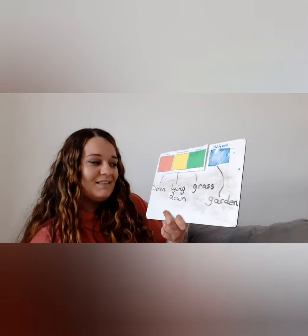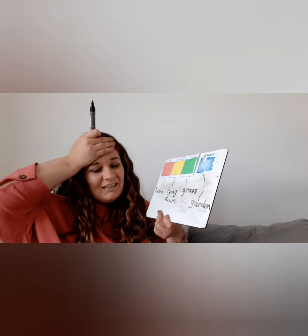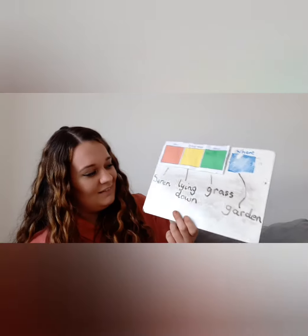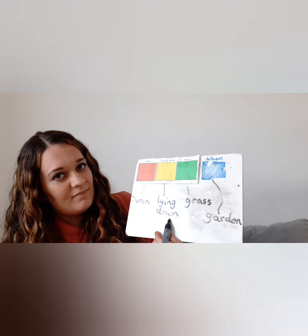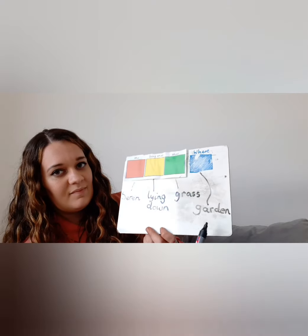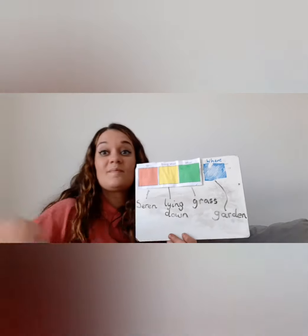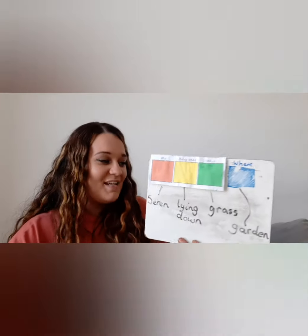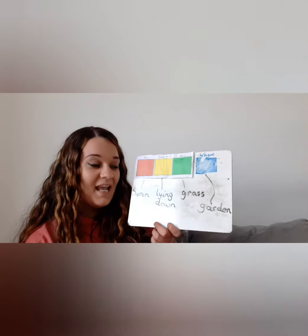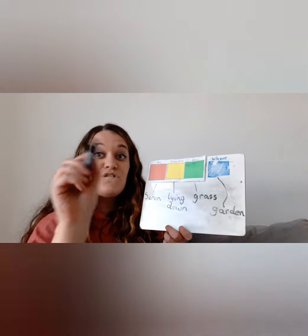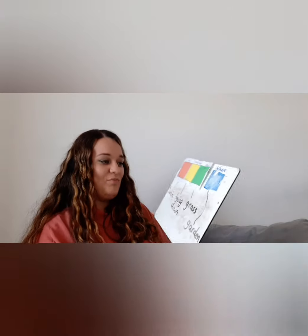Doesn't make sense. Seren lying down grass garden — I just can't work it out. Guys, can you please help me with this one? Thank you. Full stop at the end. Amazing. Seren is lying down on the grass in her garden. Full stop. Amazing. Well done guys. Super impressed.